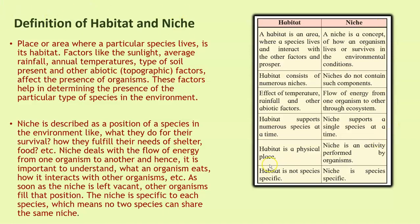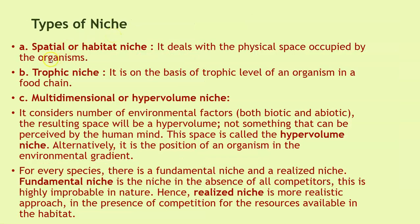Here is a difference between habitat and niche — you can pause the video to have a look. There are three types of niche: spatial or habitat niche, which deals with the physical space occupied by organisms; trophic niche, which is based on the trophic level of an organism in a food chain; and multidimensional or hypervolume niche, which considers the number of environmental factors — both biotic and abiotic. The resulting space is called a hypervolume and represents the position of an organism in the environmental gradient.